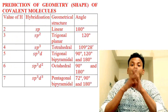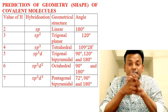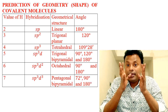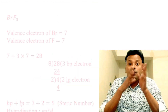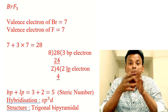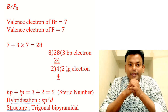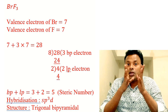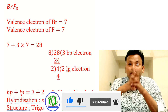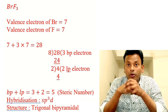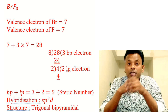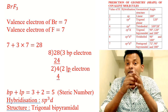The prediction of geometry or shape of covalent molecules — this table was discussed in the previous class. Today I will discuss the application of VSEPR theory to BrF₃. Here, the valence electrons of bromine is 7, and the valence electrons of fluorine is 7. Total number of valence electrons equals 28. First, we divide 8 for the octet rule — that is three bond pairs — and the remainder is 4. Next, divide 2 for lone pair electrons, which equals 2 lone pairs. So bond pairs plus lone pairs equals 3 + 2 = 5. The steric number is 5, and the hybridization is sp³d.